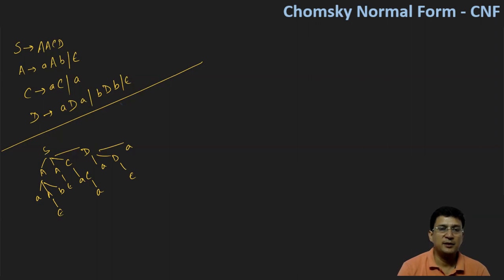So after identifying nullable symbols, we have to do the next step: we have to remove the null productions. So first we have to remove A produces epsilon.